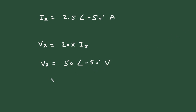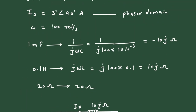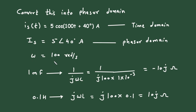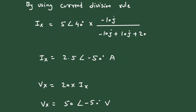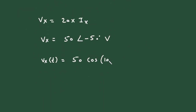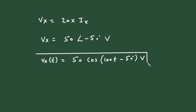This is in phasor domain. Converting back to time domain: Vx(t) = 50cos(100t - 50°) volts. The omega value is 100 radian per second and phi is -50 degrees.